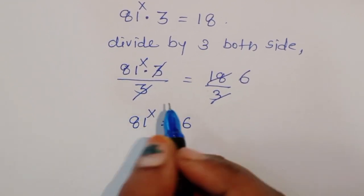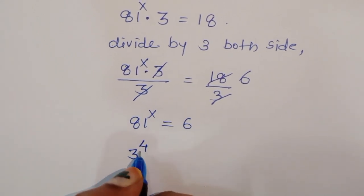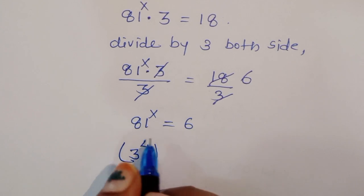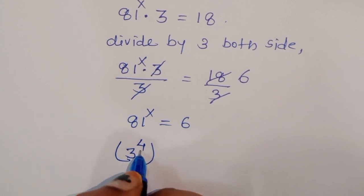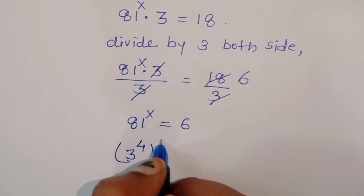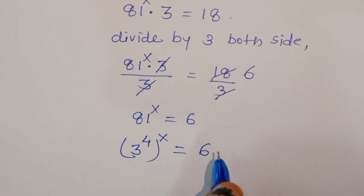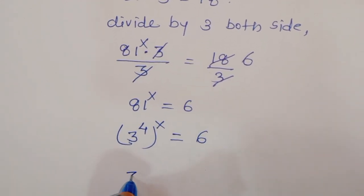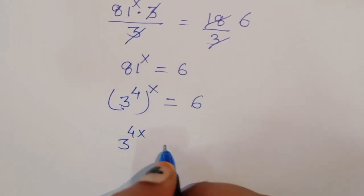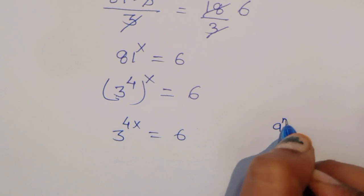Now this 81 we can write as 3 raised to 4, since 3×3=9, 3×3×3=27, 3×3×3×3=81. So 3 raise to 4 power x is equal to 6. We can write this as 3 power 4x is equal to 6, applying the formula a power m power n equals a power mn.